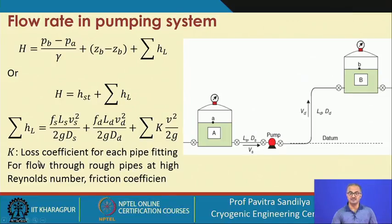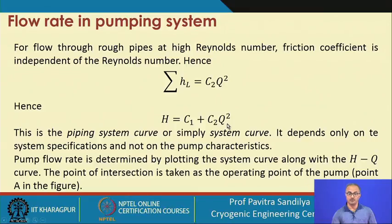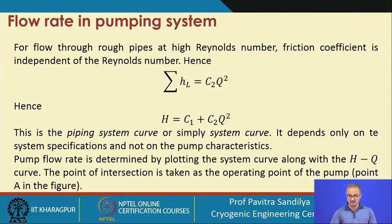With this assumption we simplify the equations to find the total head. The total energy loss due to friction includes the friction factor contribution on the suction side, on the delivery side, and losses in the various fittings and valves, accounted for by a loss coefficient K. For flow through rough pipes at high Reynolds numbers, the friction coefficient is independent of Reynolds number, so the head loss becomes a function of Q squared. This gives the relationship: H = C1 + C2 Q², called the piping system curve or system curve, which depends only on the system specifications and not on the pump characteristics.